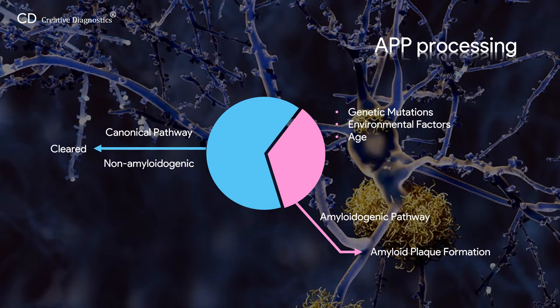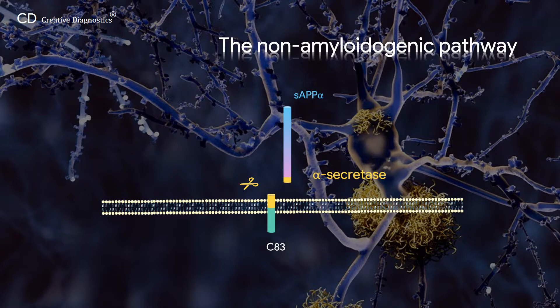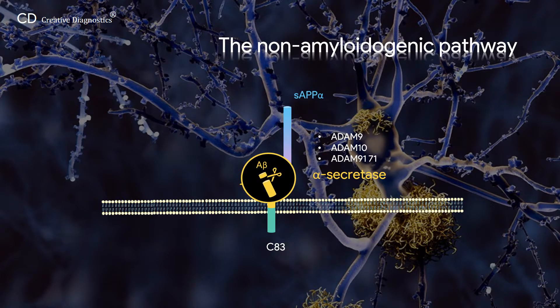Cleavage products of APP from both pathways play diverse roles that are important in neural development and function. The non-amyloidogenic pathway involves cleavage of APP by alpha-secretase to generate two fragments: an 83 amino acid C-terminal fragment that remains in the membrane, and an N-terminal ectodomain sAPP-alpha that is released into the extracellular medium. Three enzymes have been identified with alpha-secretase activity: ADAM-9, 10, and 17. Importantly, cleavage of APP by alpha-secretase occurs within the abeta domain and consequently prohibits abeta peptide production.